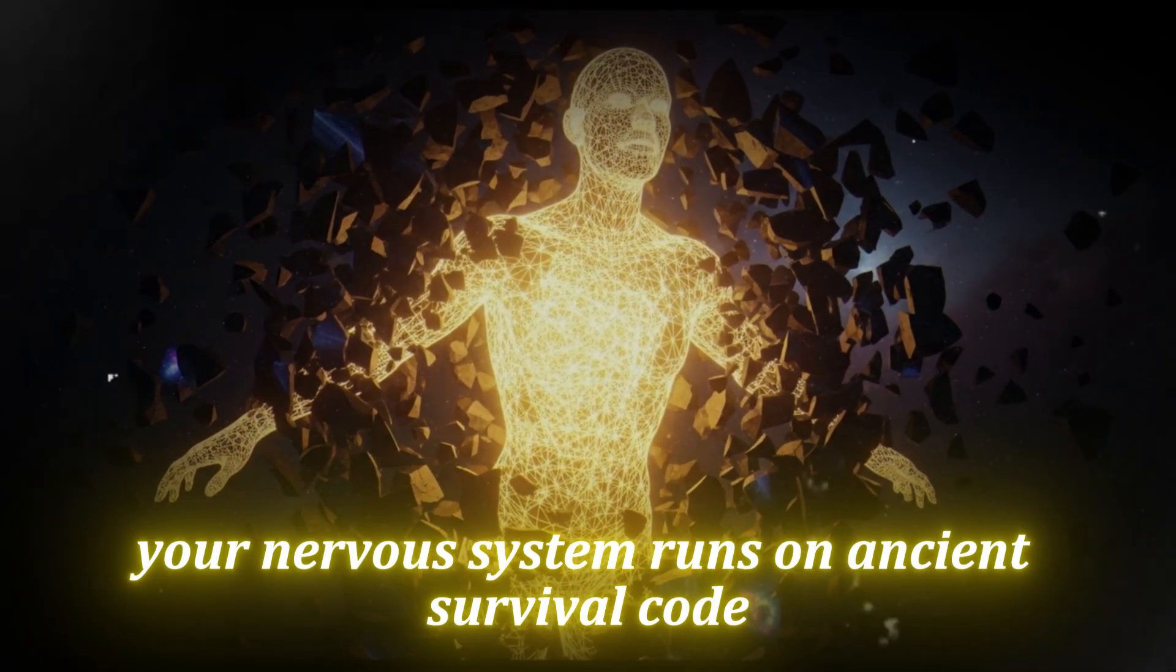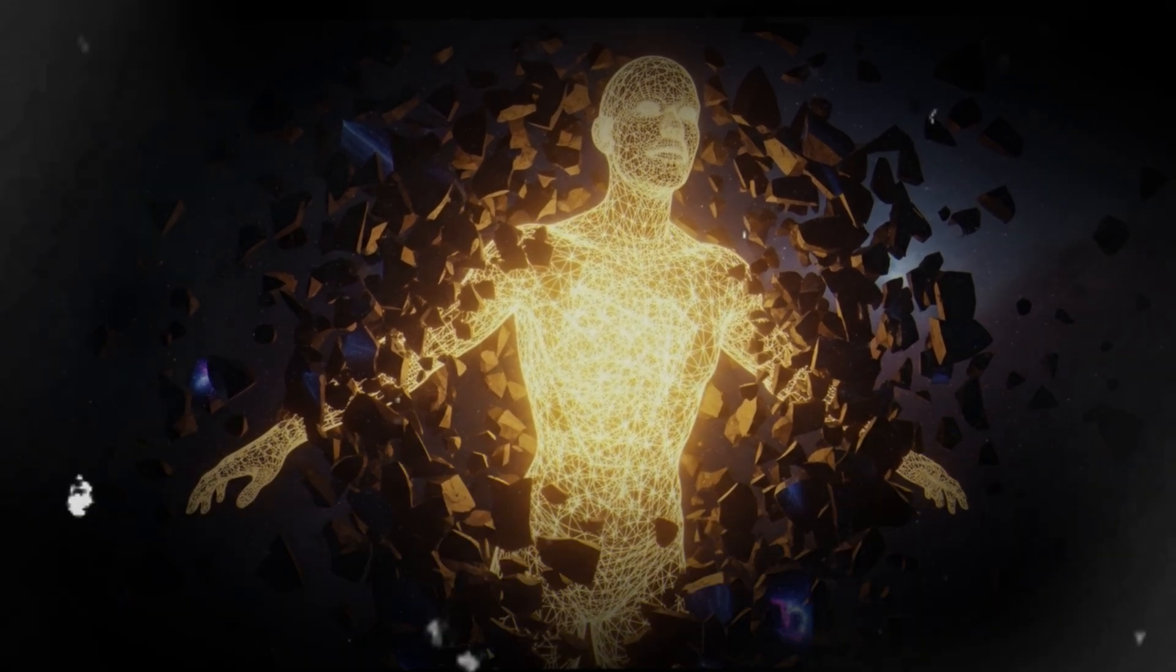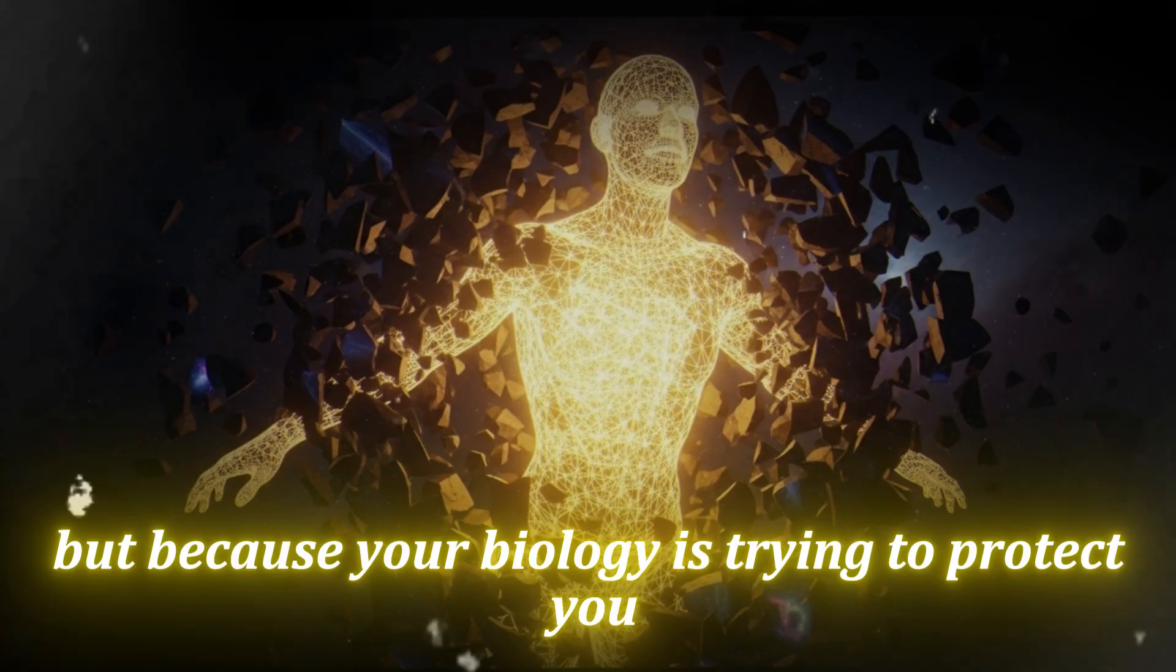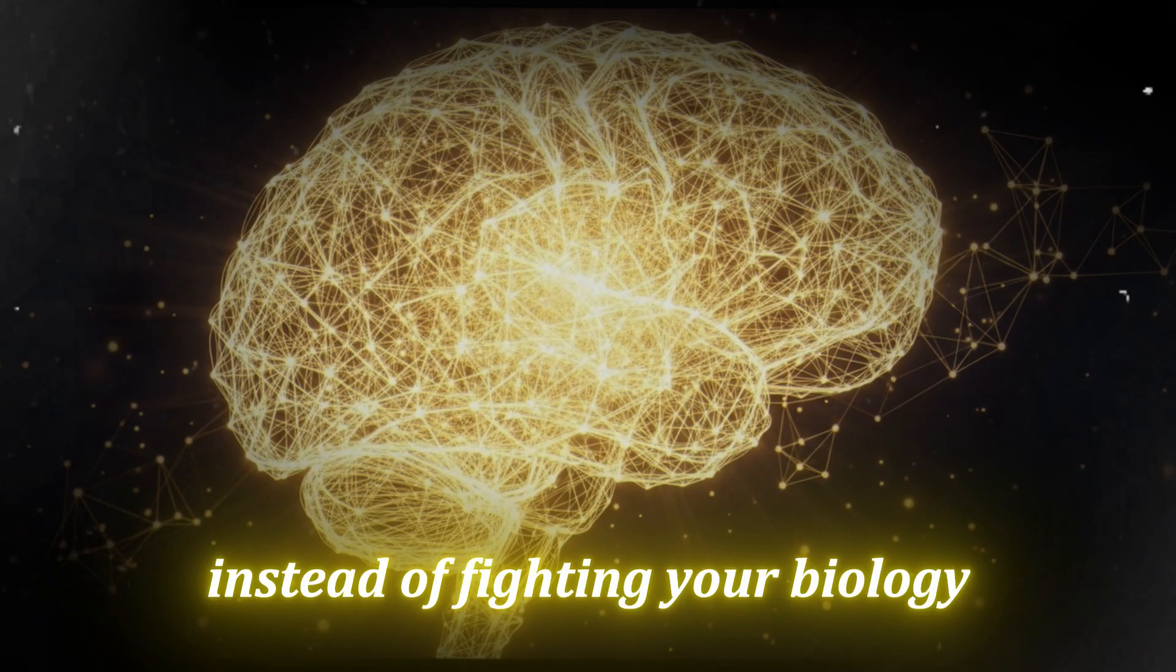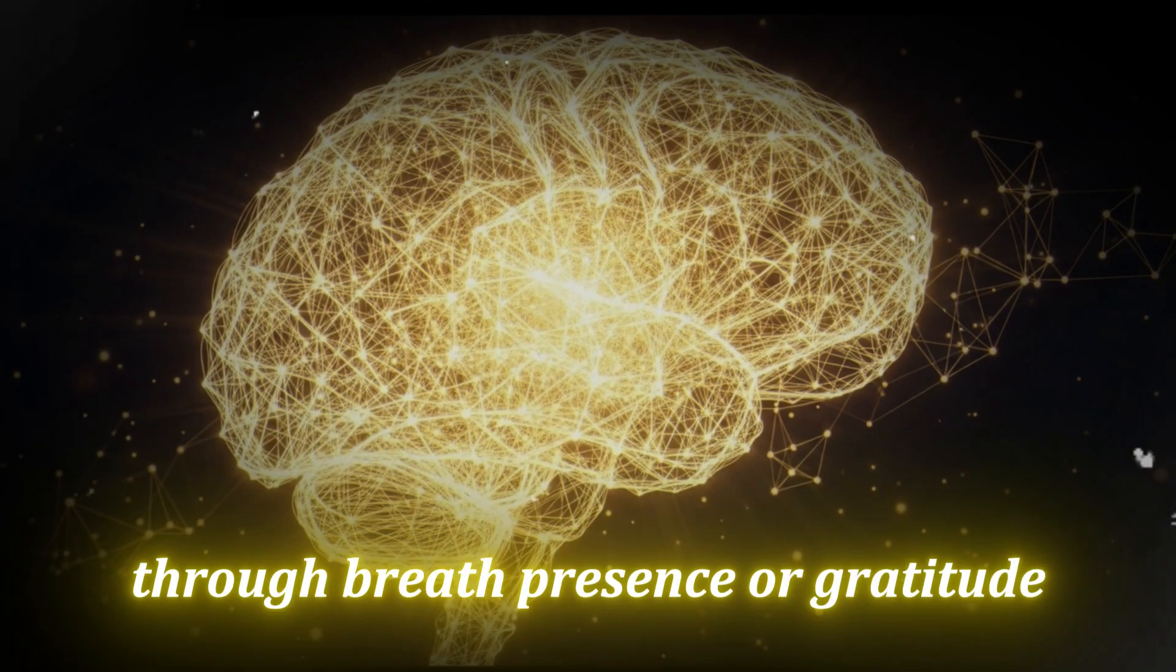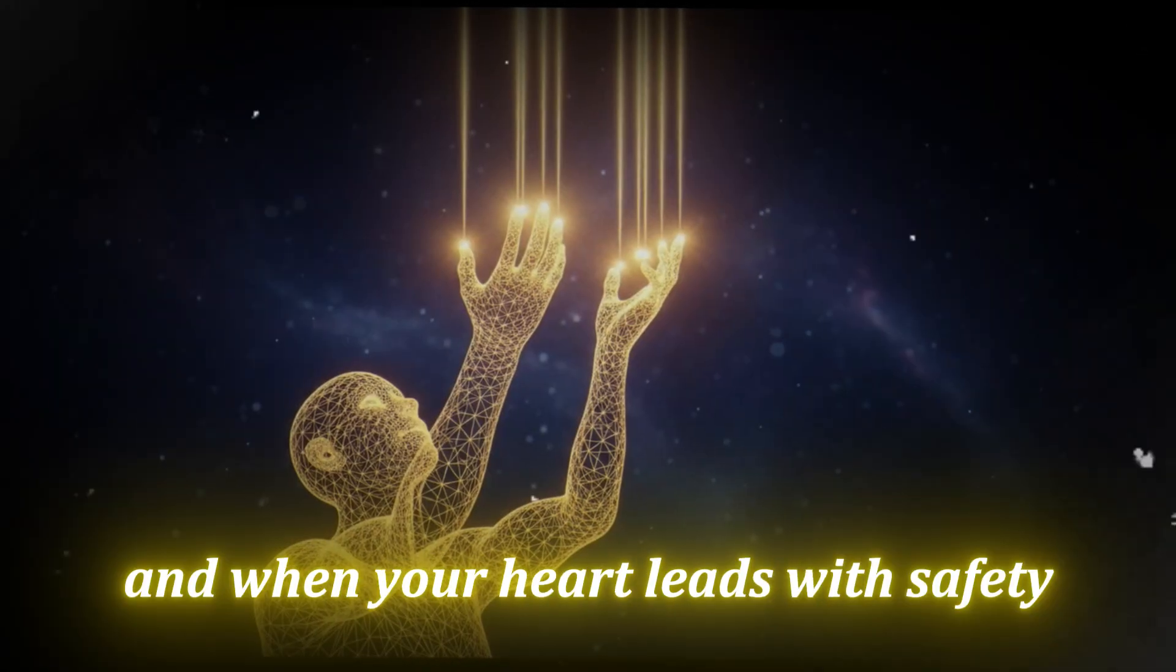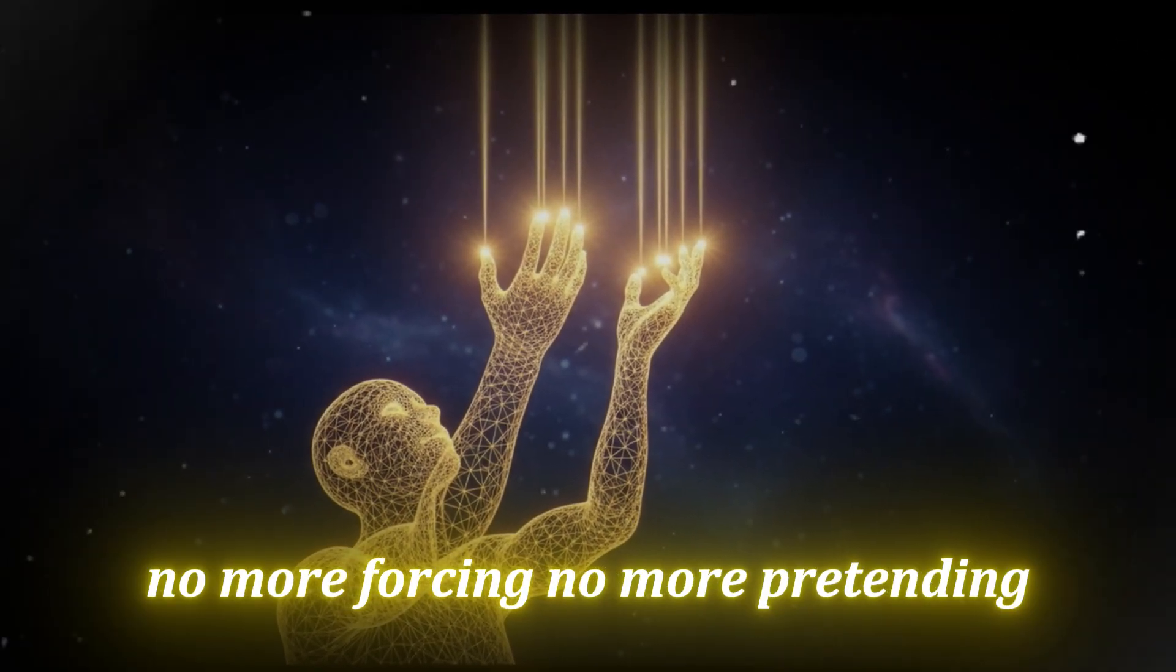Your nervous system runs on ancient survival code. When your thoughts say 'I am enough,' but your body feels unworthy, your brain doesn't see growth. It sees danger. A mismatch like that triggers stress, not because you're weak, but because your biology is trying to protect you. Here's where quantum coherence changes everything. Instead of fighting your biology, coherence works with it. When your heart rhythm becomes smooth and steady through breath, presence, or gratitude, it sends a clear signal: we are safe. Not faking it, feeling it. And when your heart leads with safety, your whole system relaxes. No more forcing, no more pretending.